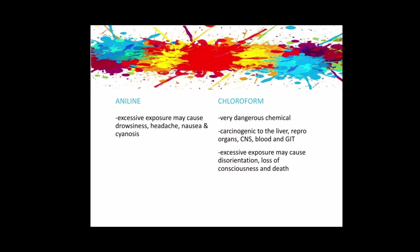Aniline is toxic when absorbed by the skin, can cause severe irritation of the eyes, and is a potential carcinogen. Excessive exposure may cause drowsiness, headache, nausea, and cyanosis — a blue discoloration of the skin. Routine use should be avoided if possible. Chloroform is a very dangerous chemical that is toxic when inhaled or ingested, is carcinogenic, and can affect the liver, reproductive organs, central nervous system, blood, and gastrointestinal tract. Excessive exposure to its vapor can cause disorientation, loss of consciousness, and death. Its use in the laboratory should also be avoided.